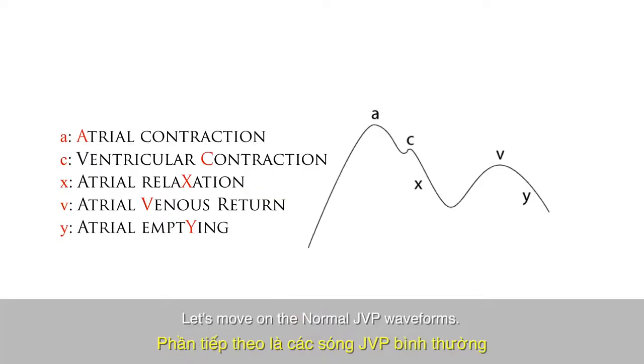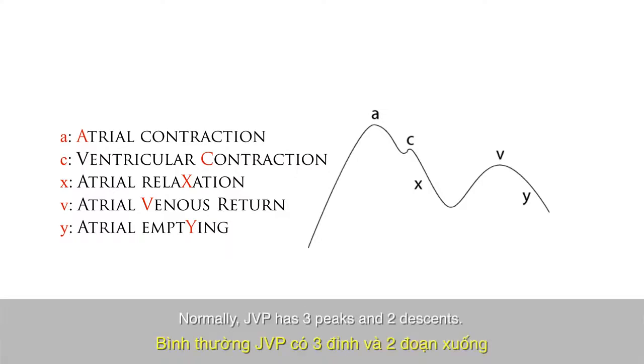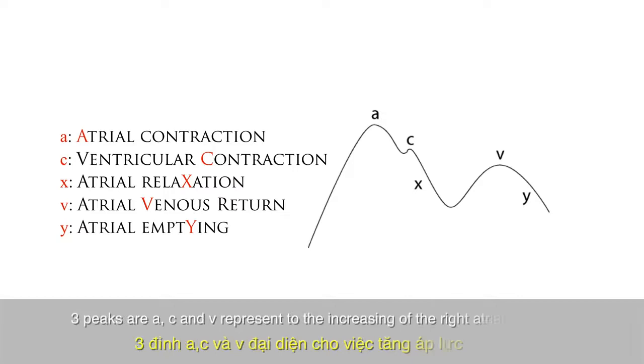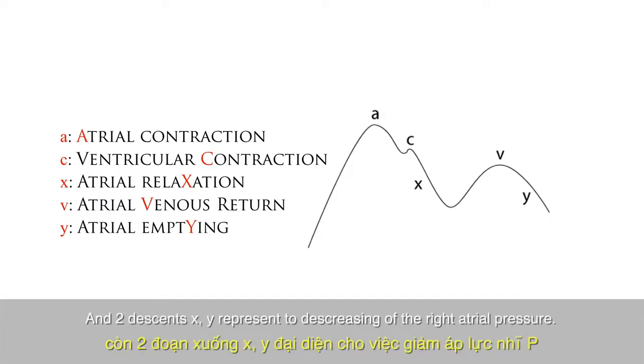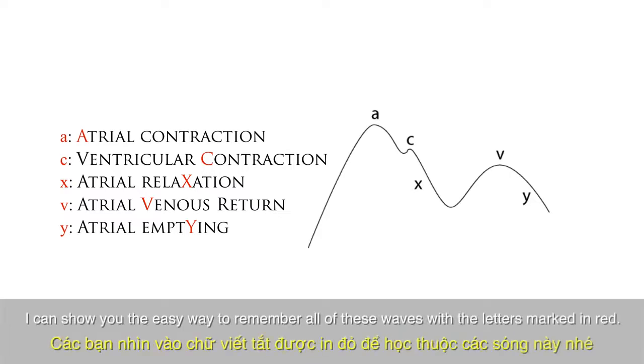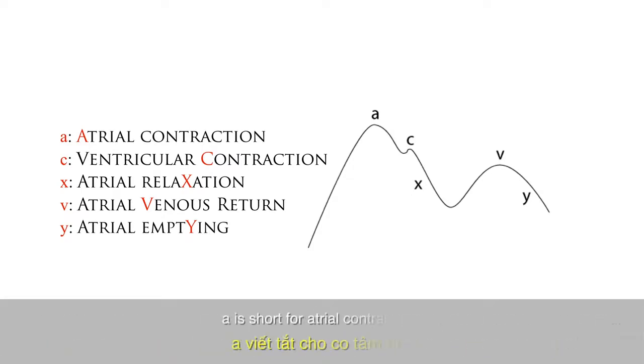Let's move on to the normal JVP waveforms. Normally JVP has 3 peaks and 2 descents. Three peaks A, C and V represent the increasing of the right atrial pressure. And two descents X and Y represent decreasing of the right atrial pressure. And I can show you the easy way to remember all of these with the letters marked in red. A is short for atrial contraction, C is short for contraction of the right ventricle, X is short for relaxation of atrial, V is short for venous return, and Y is short for passive emptying of atrium.